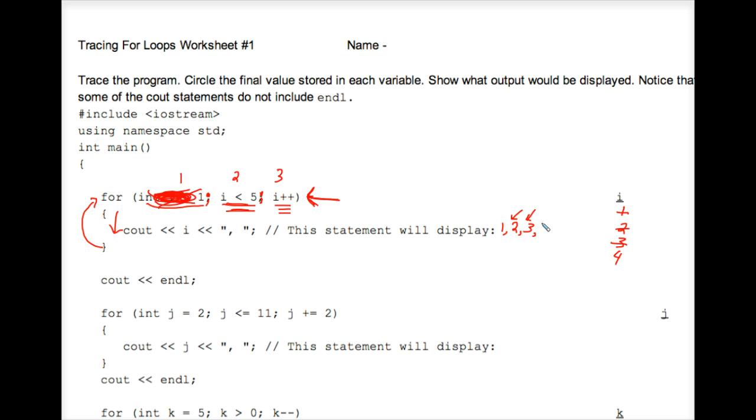i is now 4, so that prints out. We go back up to the top of the for loop. i plus plus is to 5, and we carefully ask ourselves, is 5 less than 5? No, it's not, that's false. So we don't go through the loop again, and we're done with this first part of the program.